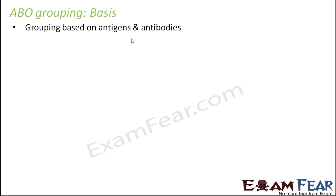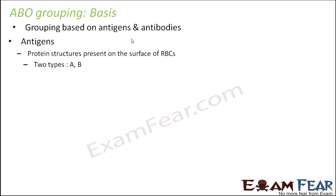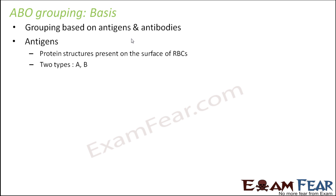Let us talk about the ABO grouping — it is based on antigens and antibodies. Antigens are protein structures present on the surface of RBCs, that is the red blood cells. There are two types of antigens: A and B. These are the two types of antigens that can be present on the surface of the RBCs.